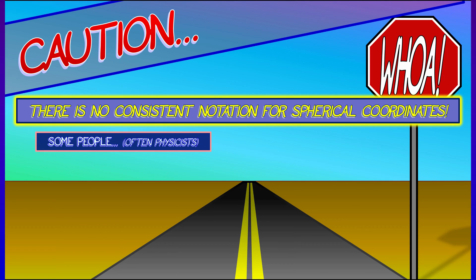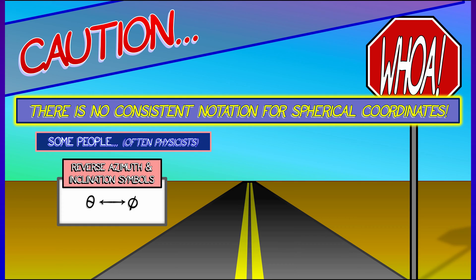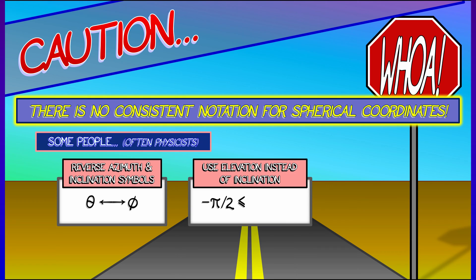Some people, often physicists, wind up reversing the symbol for the azimuth and the inclination. They mix up the theta and the phi. Oh, why would you do that? And then they'll mess up the bounds on the inclination angle.